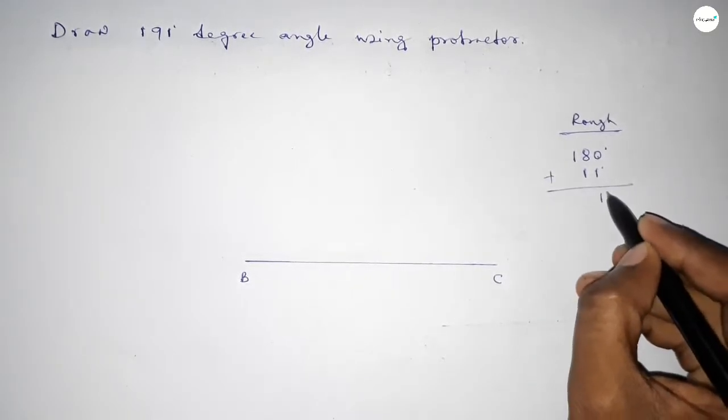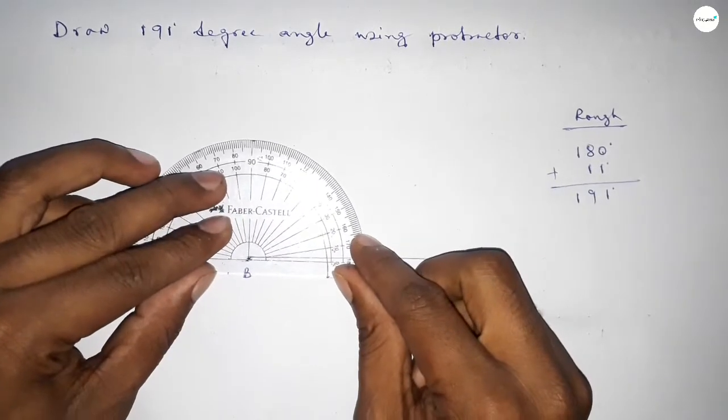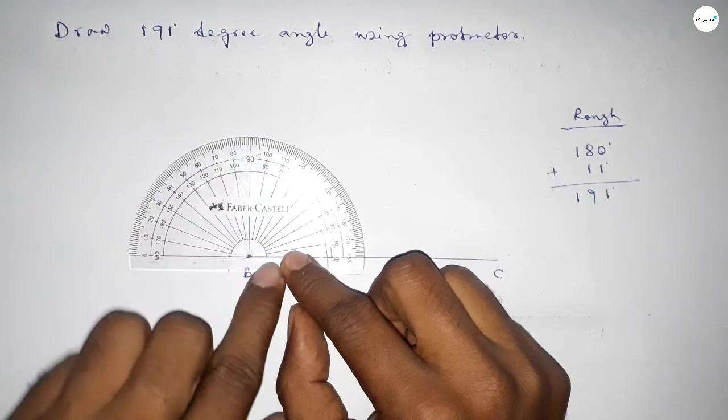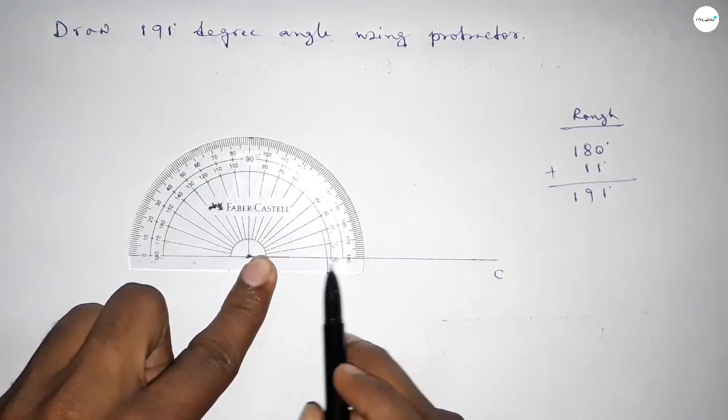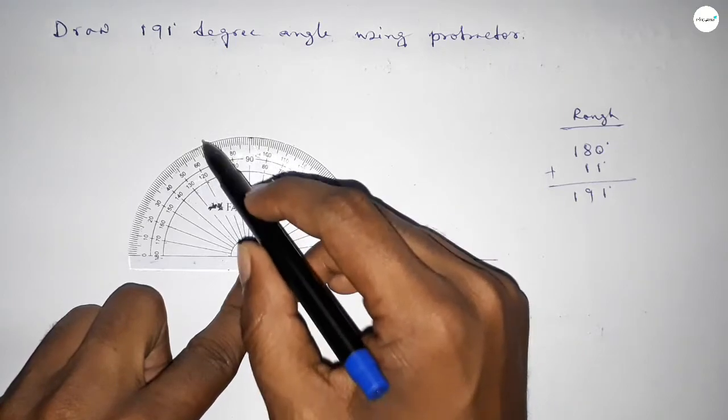So first we have to count 180 degree angle. So putting the protractor on the point B perfectly, then counting angle 10, 20, 30, 40, 50, 60, 70, 80, 90, 100, 110, 120, 130, 140, 150, 160, 170, 180.